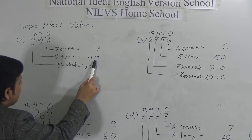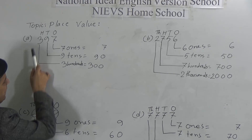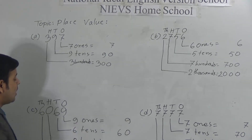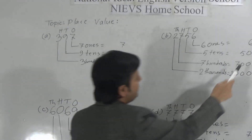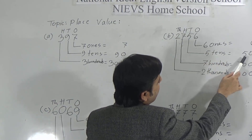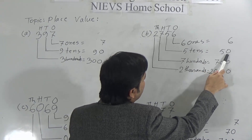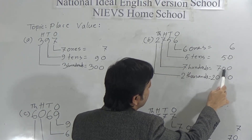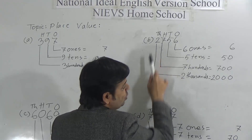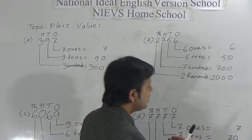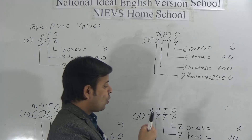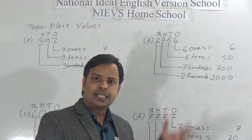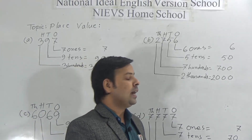You can remember our technique: the first digit will remain the same always. For the second digit, write zero in the first place and write the second digit. For the third digit, the first and second places must be zero. For example, here the first digit is six, so it is just six. For the second place, write five with a zero after it — fifty. For the third place, write seven with two zeros — seven hundred. For the last place, write two with three zeros — two thousand.